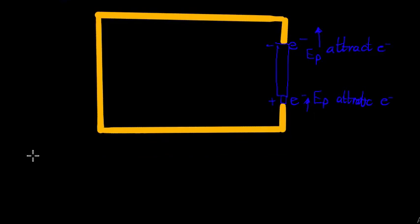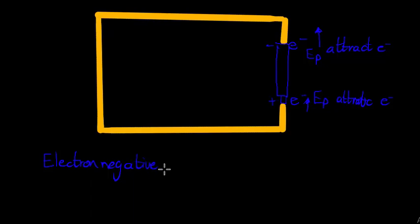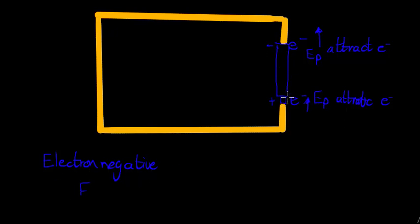For those of you who've done chemistry, this is definitely related to electronegativity — the ability to attract electrons. You'll notice that fluorine has the highest electronegativity, so if fluorine is somehow involved in this battery it will have a very high ability to attract electrons.